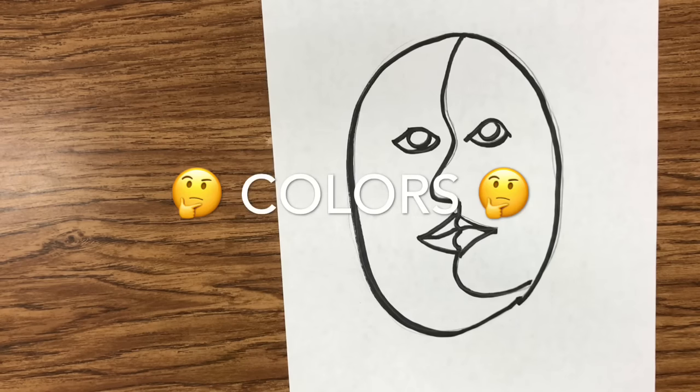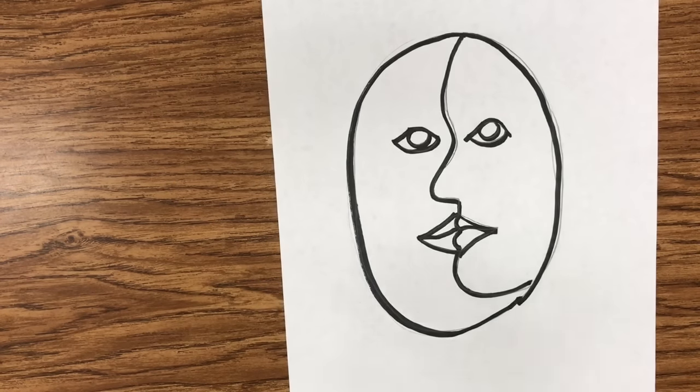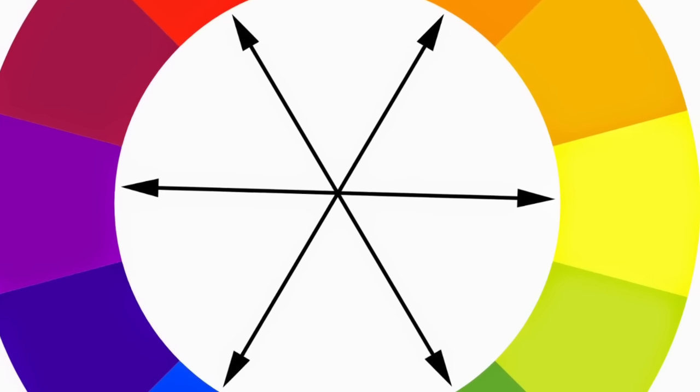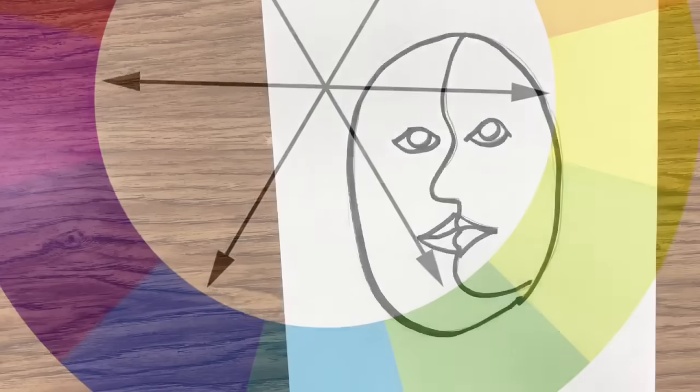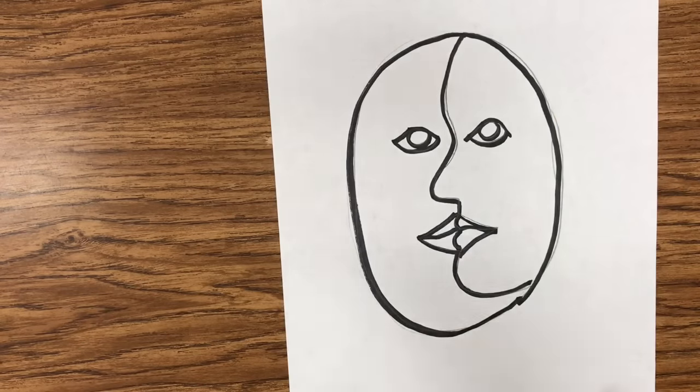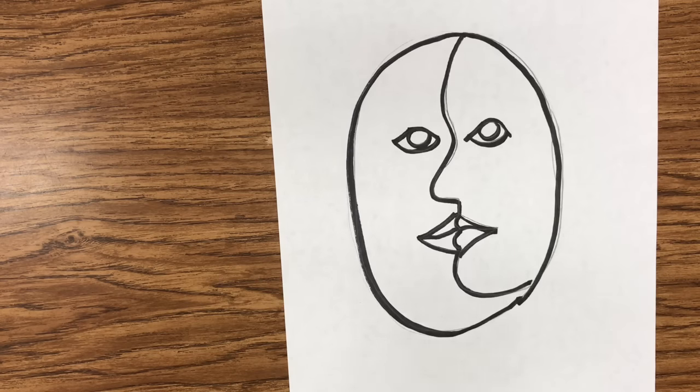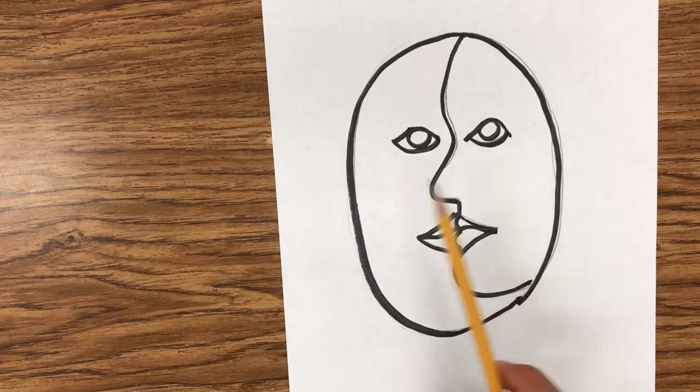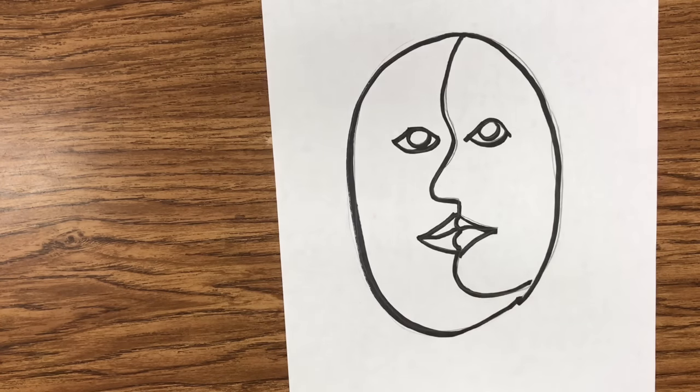And then for coloring, what I do is I have them choose one of the complementary colors. Complementary colors are colors that are opposite on the color wheel, so we're thinking of either green, yellow and purple, or blue and orange. So you can choose any one of those color combinations, whichever side that you want to do, one of those complementary colors on one side and then the other color on the other side.